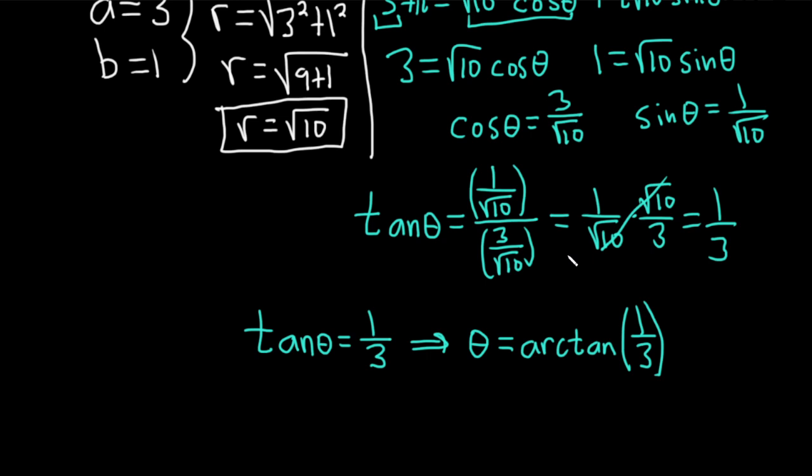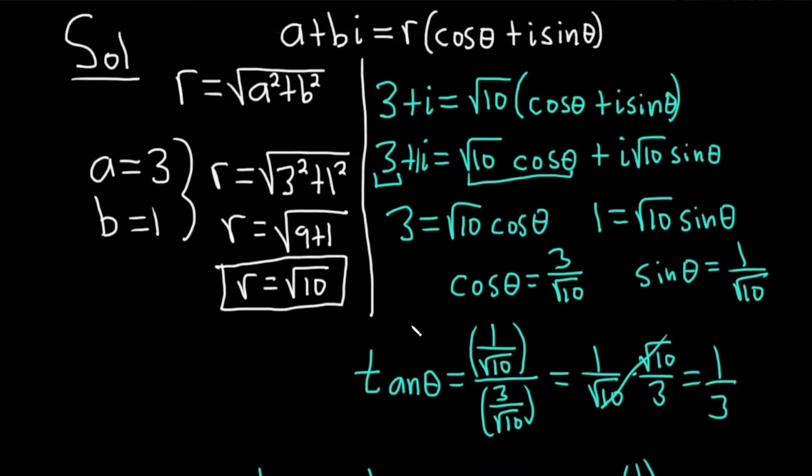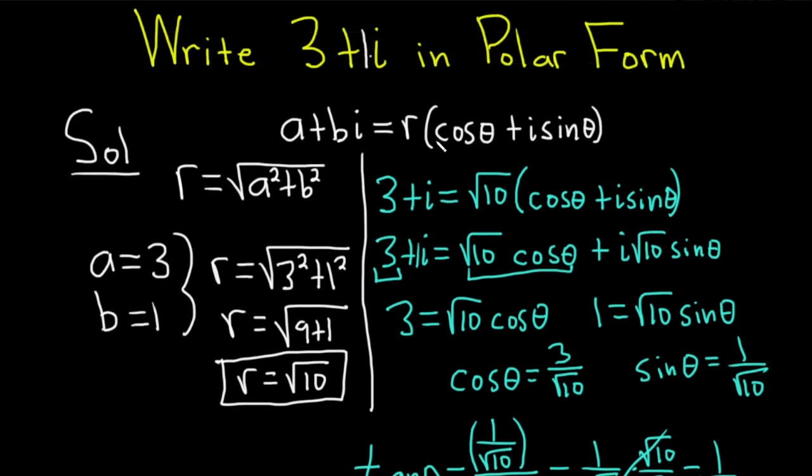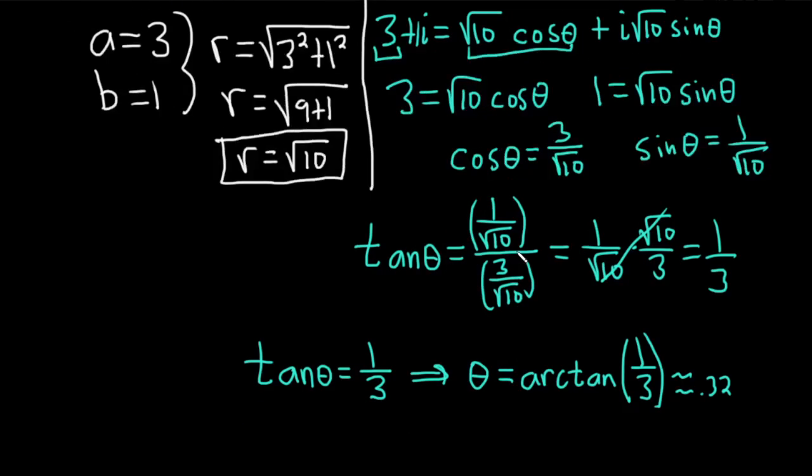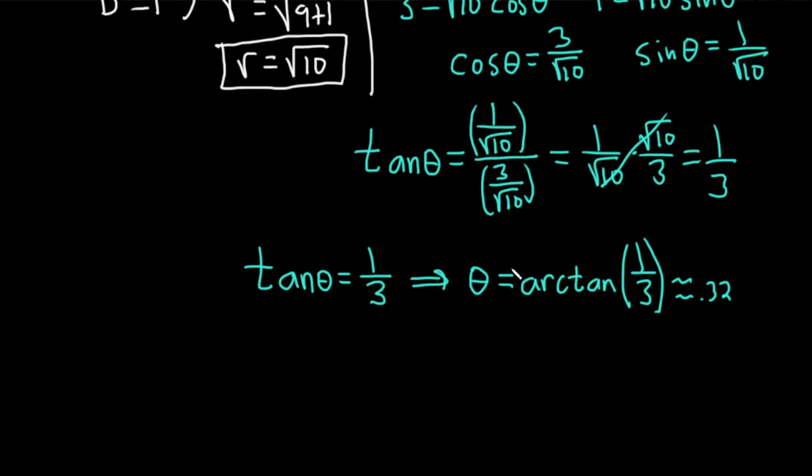So this is approximately 0.32. I'm going to leave it like this, that was arctan 1/3. Now we can write down our answer in polar form. In polar form, it's going to be R and then cosine theta plus i sine theta. So our R was the square root of 10.